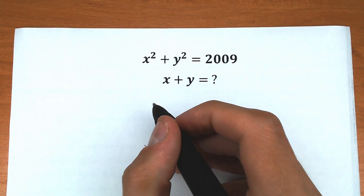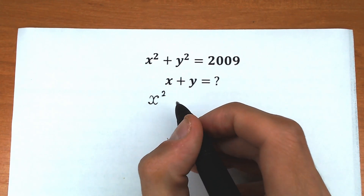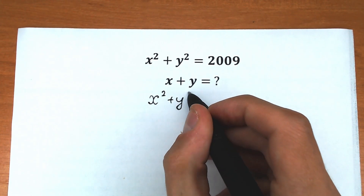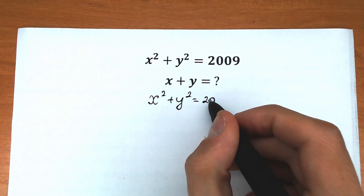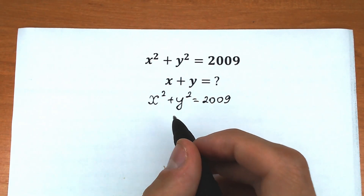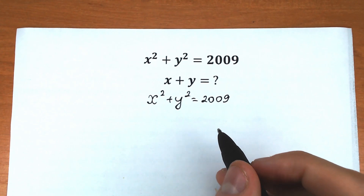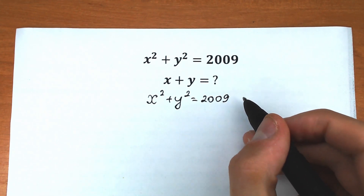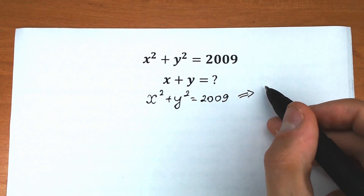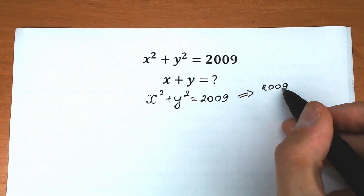First of all, let's rewrite our challenge. We have x² + y² = 2009. Let's simplify this a little bit and rewrite it in another way. I want you to look closely at this number 2009.